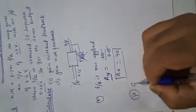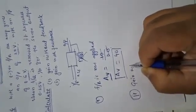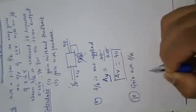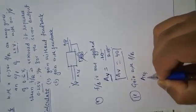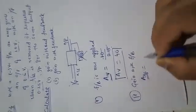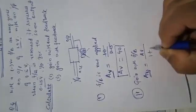Second case: gain with feedback. We have to find gain with feedback. Gain with feedback is denoted by AvF and equals Av divided by 1 plus Av times beta.